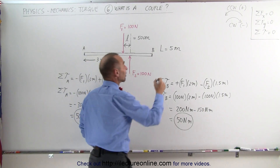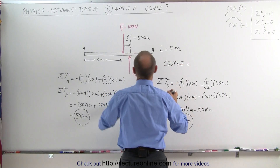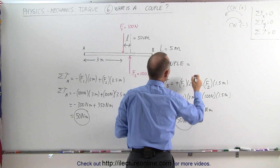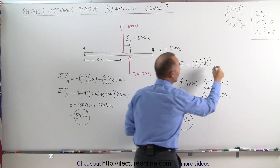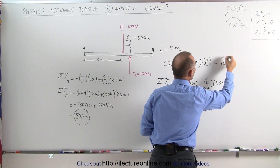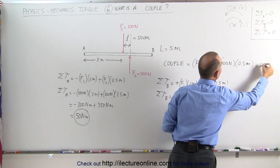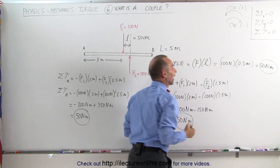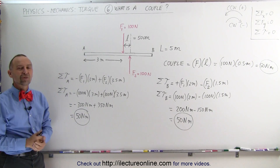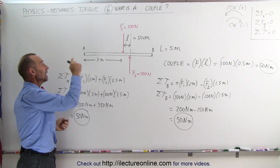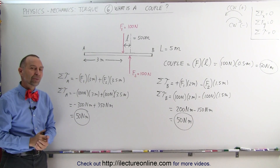The couple is equal to the magnitude of either force multiplied times the distance between them. In this case, that's equal to 100 Newtons multiplied times 0.5 meters, which is equal to 50 Newton meters. The couple is simply the force times the distance between them. You can find it by picking any pivot point and summing up all the torques, or simply multiplying the magnitude of the force times the distance between them.